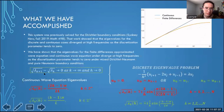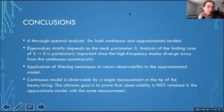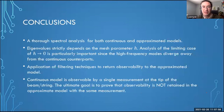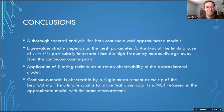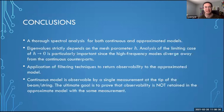In summary: the gap between eigenvalues goes to zero as K approaches infinity and H goes to zero. We performed a spectral analysis of both the continuous and approximated models looking at their eigenvalues. This work was continued by Emma and Wilson. We showed that eigenvalues depend strictly on the mesh parameter H, and there could be more analysis of the limiting case. The ultimate goal — shown by Emma — was to demonstrate that observability is not retained in the approximated model with measurement at the tip, and that filtering techniques needed to be applied.